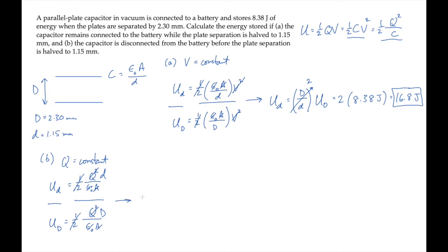That shows us that the new stored energy is now the opposite ratio of the separations times the original stored energy. It's one half the original stored energy, giving us 4.19 joules.